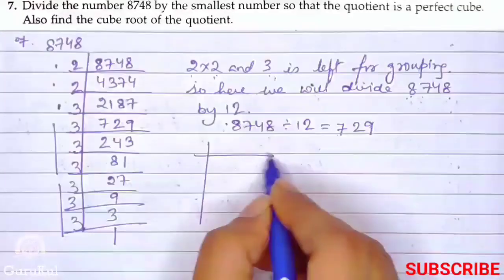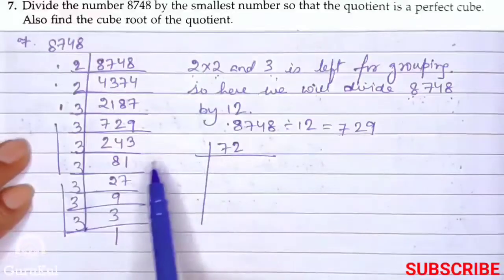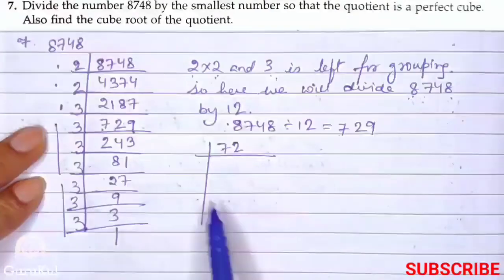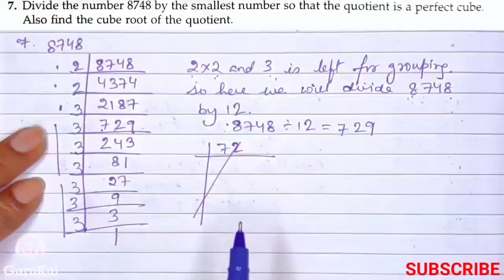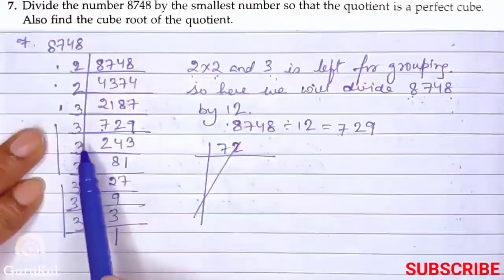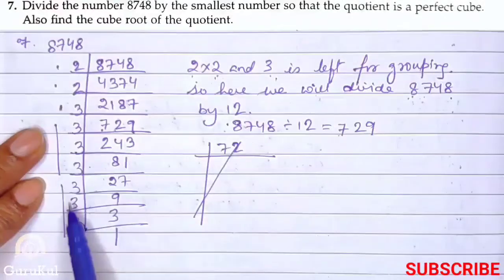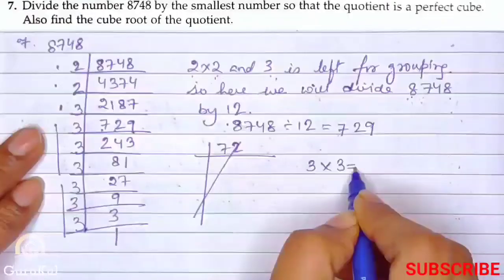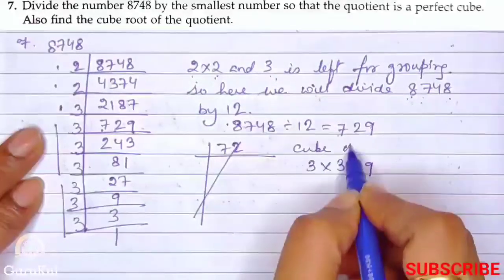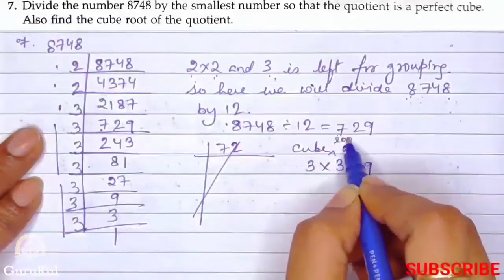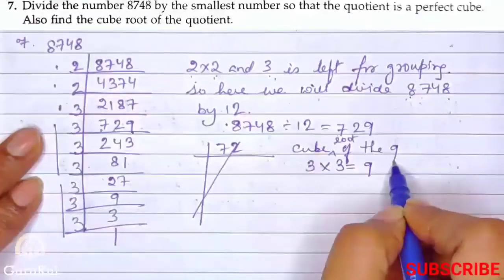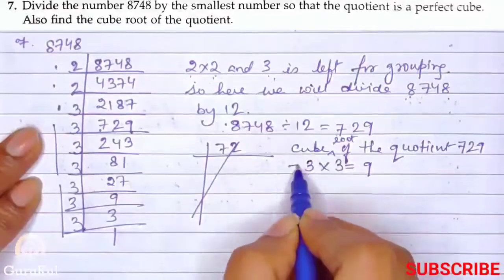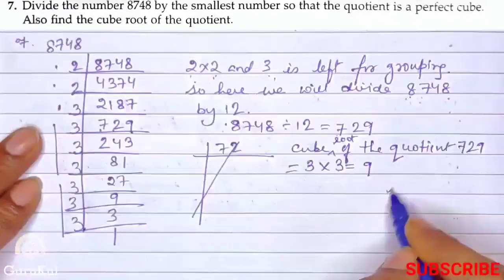The quotient is 729. Now we are going to find the cube root of 729. Again prime factorization, as you can see on the screen. We are not doing it here but you please do it in your copy. After grouping, 3 one time, 3 another time. So this gives us 3 × 3 equals 9. The cube root of 729 equals 3 × 3 and the answer is 9.